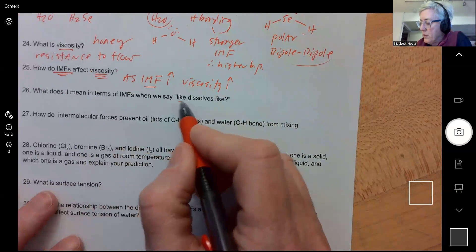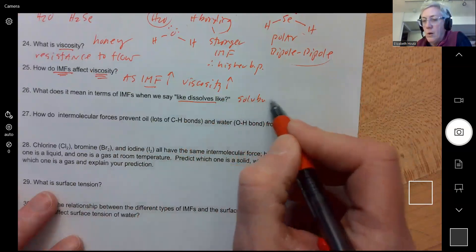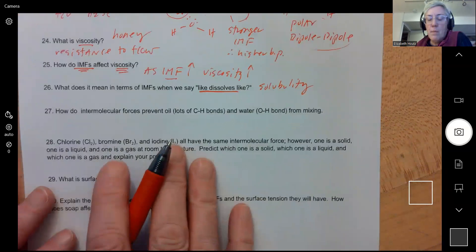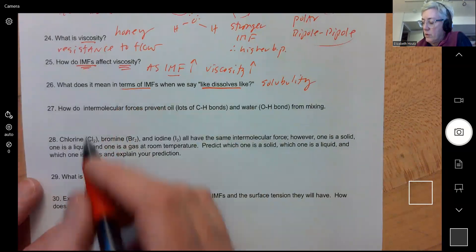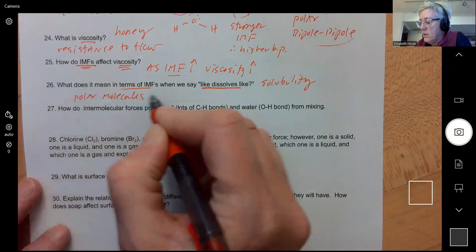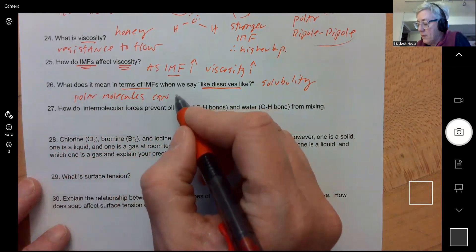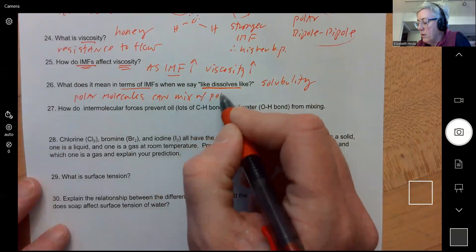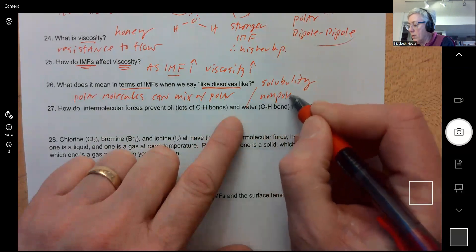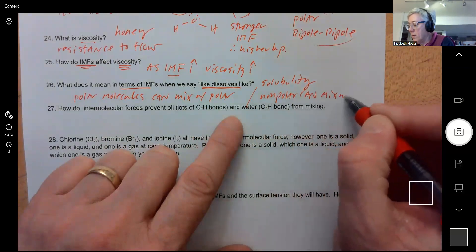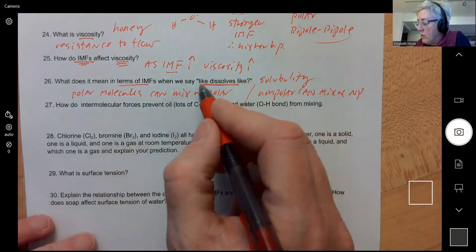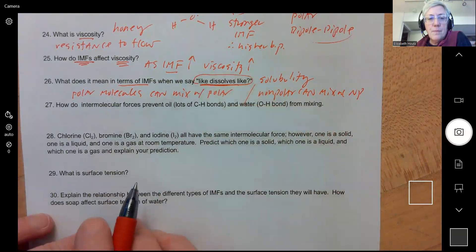Number 26, this one's about solubility. In other words, how well do things dissolve? So when we say like dissolves like, what that means is in terms of intermolecular forces, it means polar molecules can dissolve polar, can mix with polar because they have the same kind of intermolecular force. And non-polar can mix with non-polar because they have similar intermolecular forces. So similar intermolecular forces mix together. That's what this means: like dissolves like.